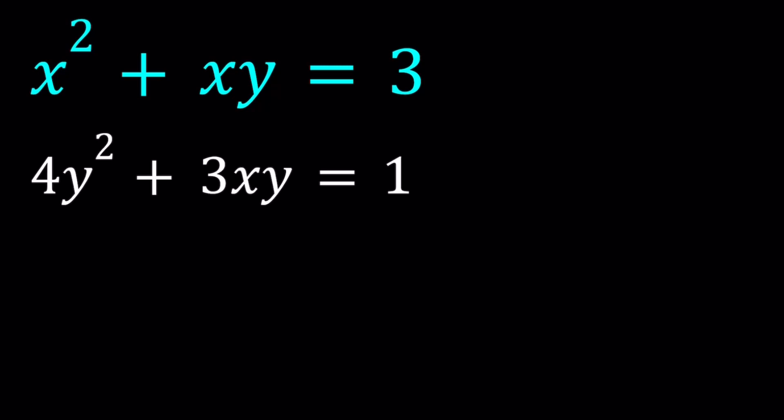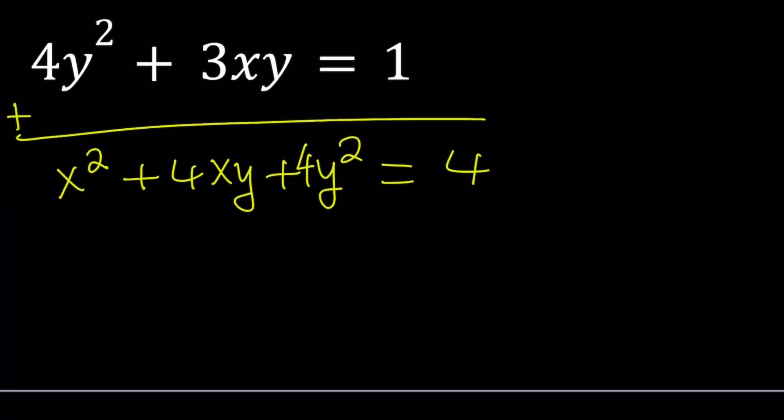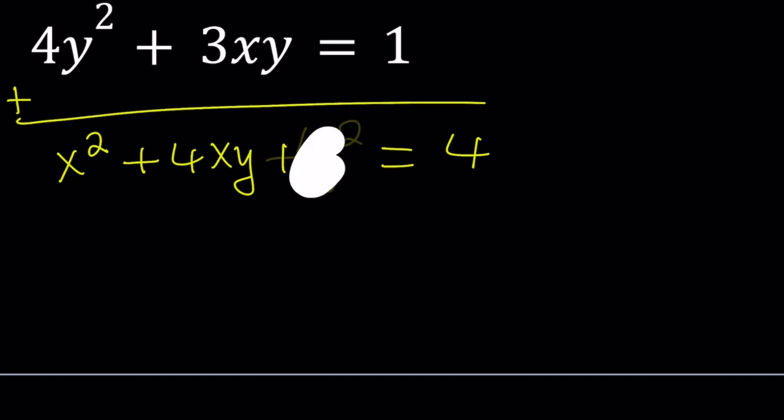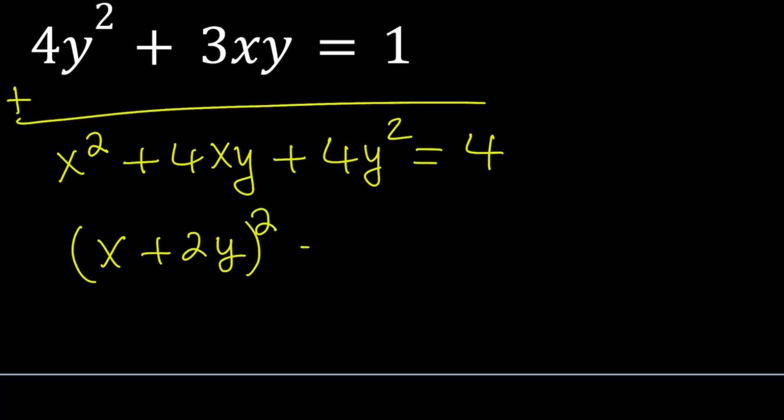You probably notice the same thing that I'm going to talk about. If you add these equations up, you'll get x squared plus 4xy plus 4y squared equals 4. And the left-hand side looks like what? Let me rewrite it. The left-hand side of this equation looks like a perfect square, doesn't it? It is x plus 2y quantity squared equals 4.